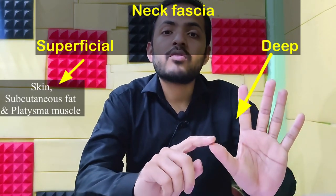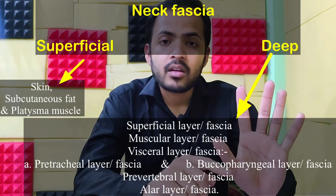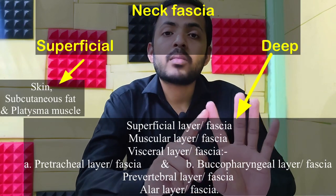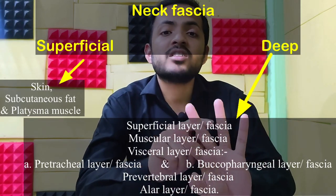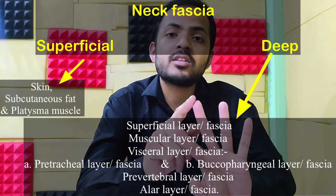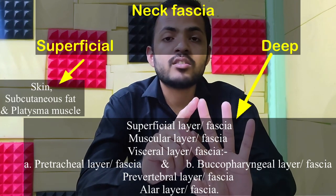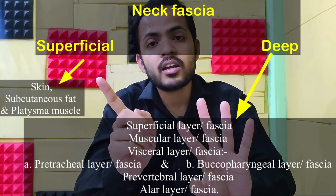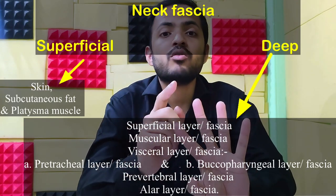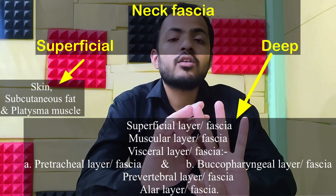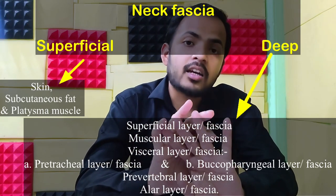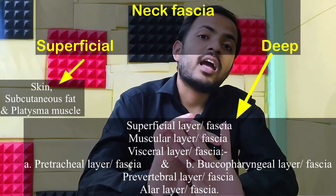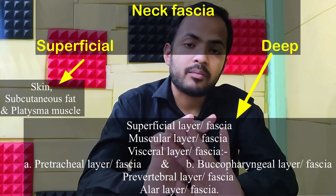The five layers of deep fascia are: first, the superficial layer; then the muscular layer; then the visceral layer, which has two parts — the pre-tracheal layer and the buccopharyngeal layer; then the pre-vertebral layer; and lastly the alar fascia or alar layer.